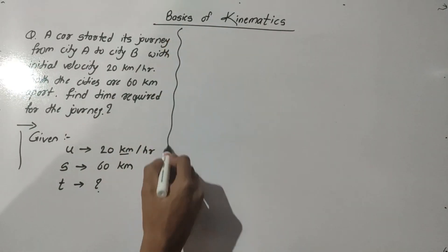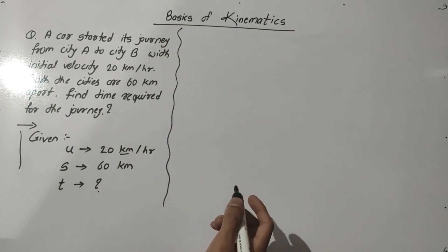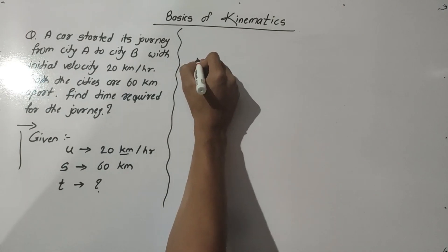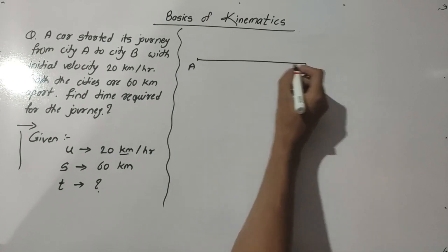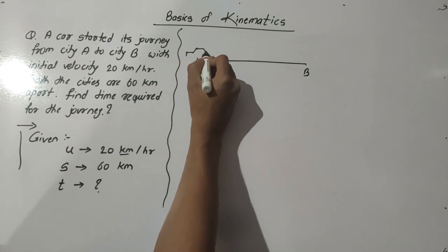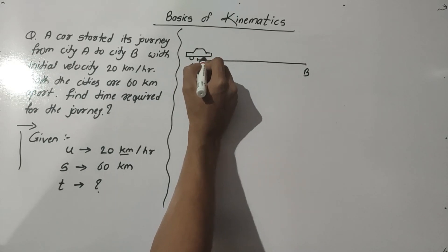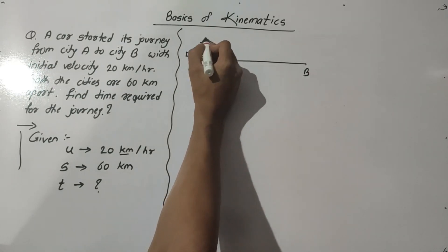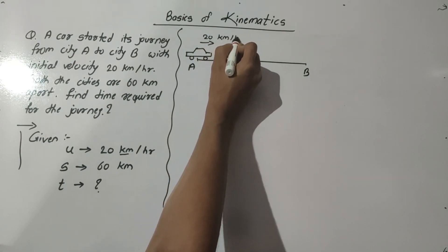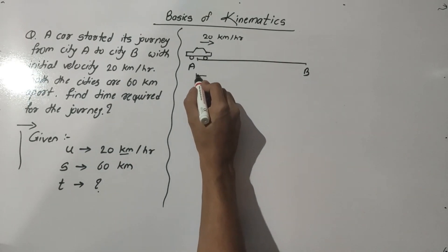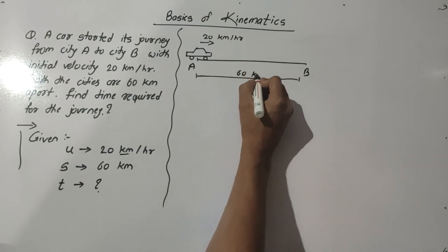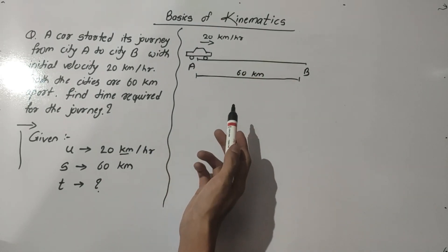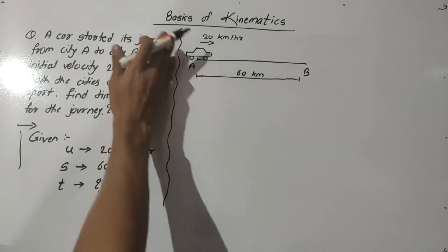For better interpretation of questions, we need to draw a diagram. So here is city A and city B. The car runs at a velocity of 20 kilometer per hour, and the distance between city A and city B is 60 kilometer. Now because of this diagram, we don't need to look at the problem anymore.